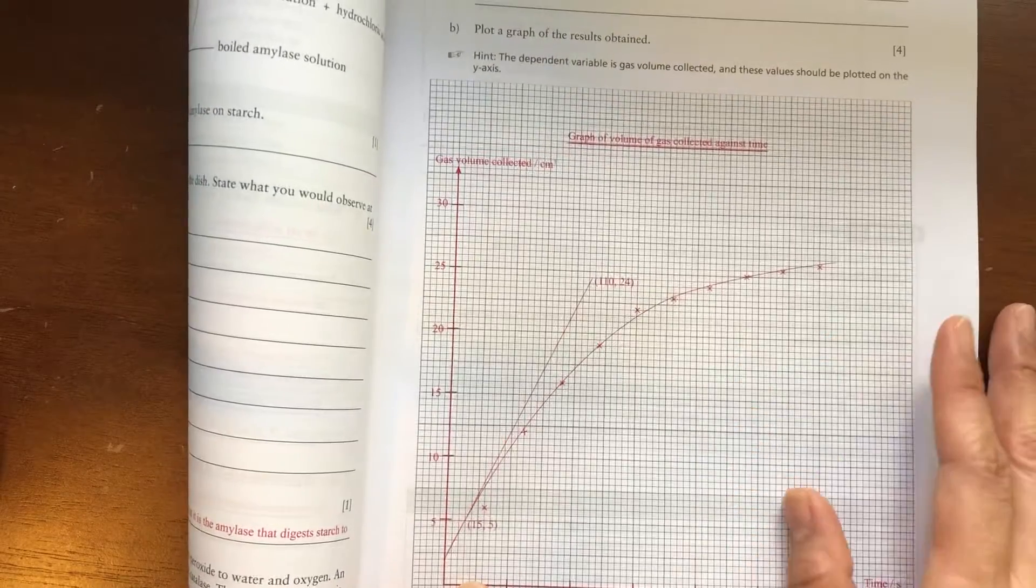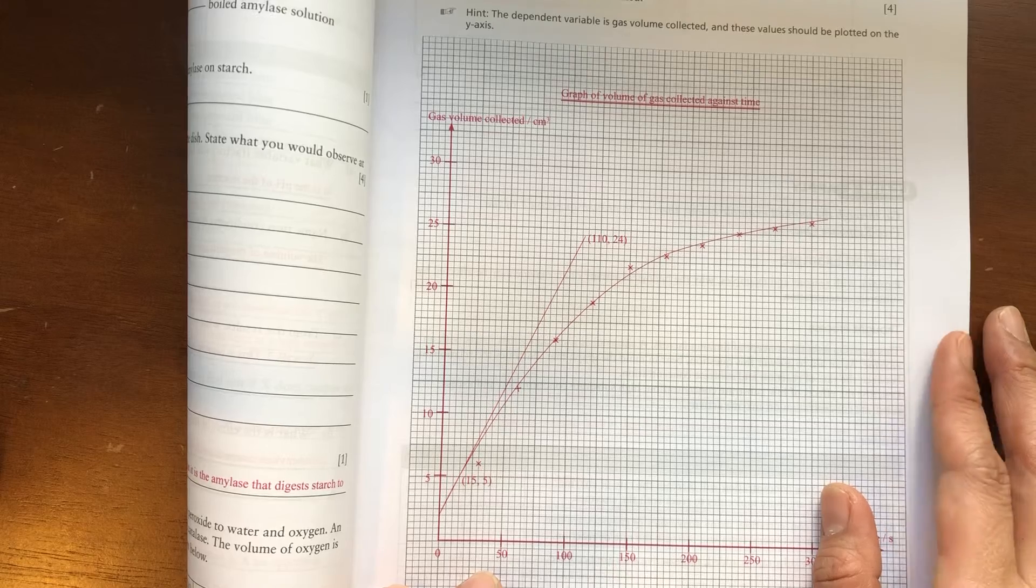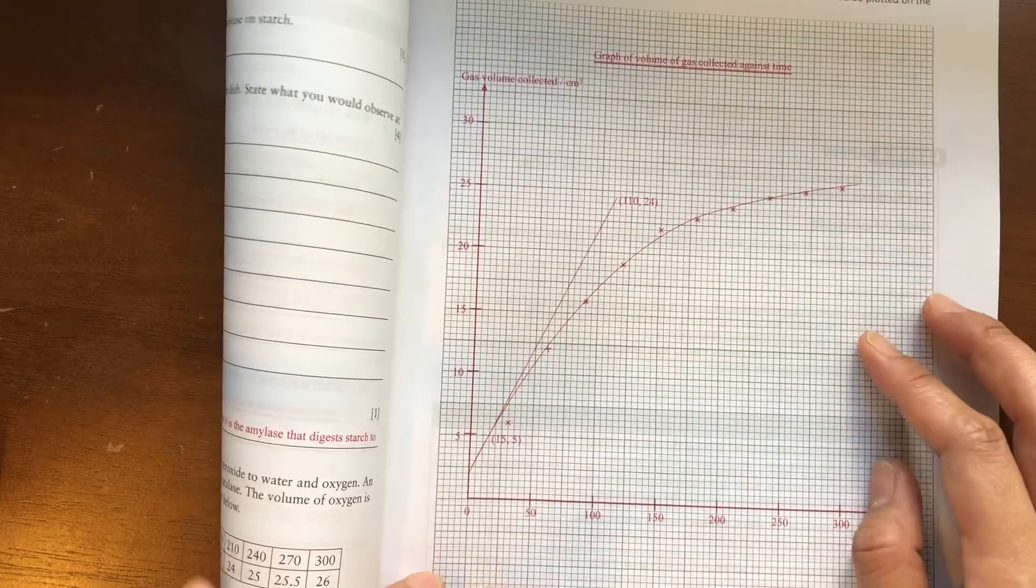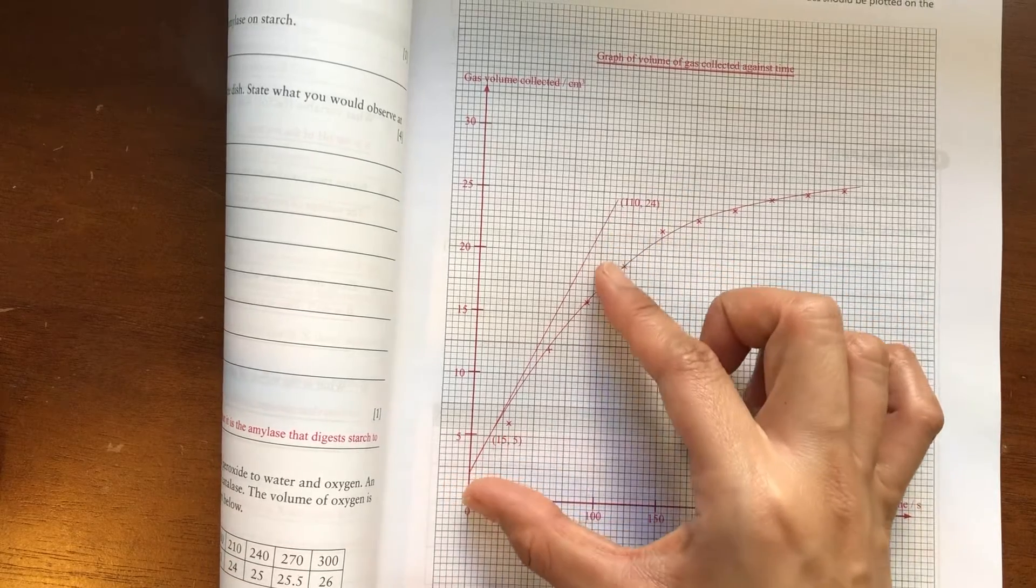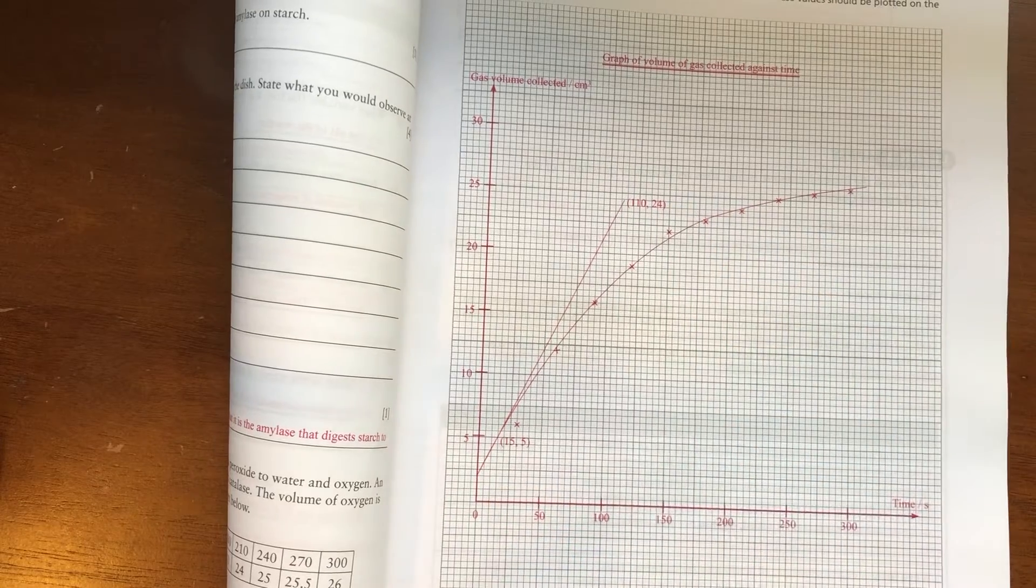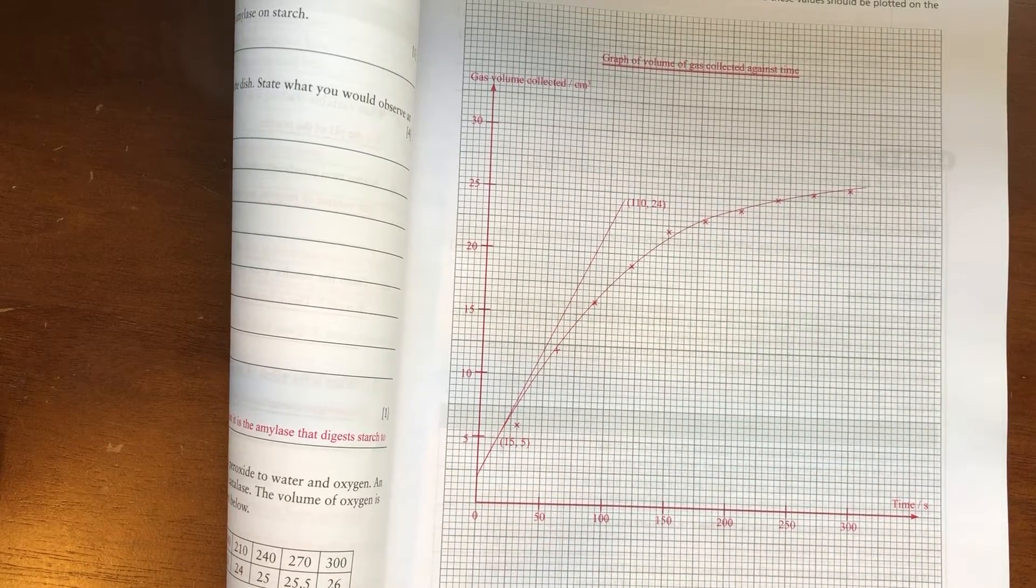Then, to find the initial rate of reaction, which is the next question, you would need to use the gradient of that portion of the graph. So this gradient is already given to you. The only thing missing here is the dotted line.